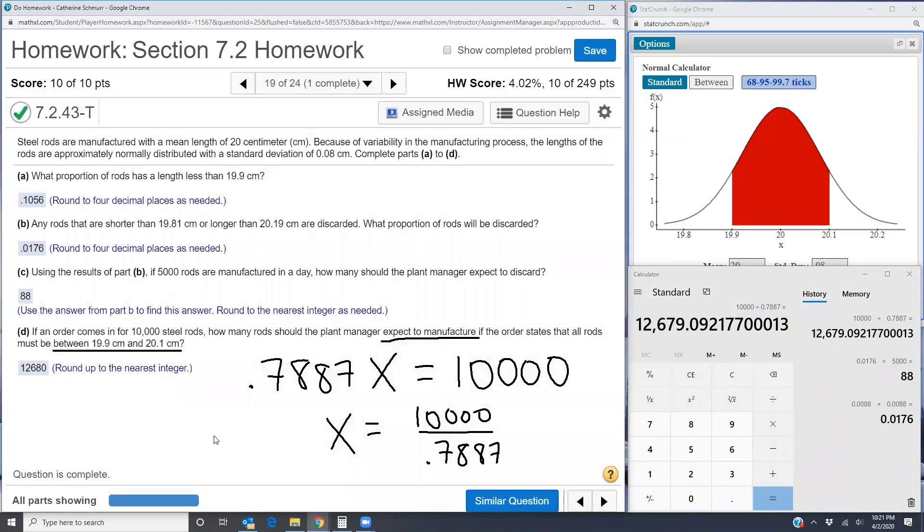The key idea here was that we didn't know how many needed to be manufactured, but we knew the proportion that would be within the specifications. So we could say, what proportion of the number manufactured had to equal the amount that got ordered.